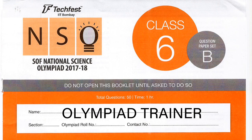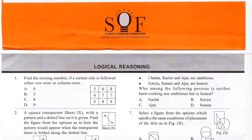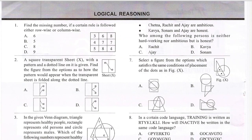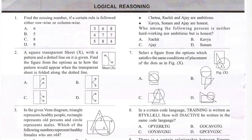The first section is logical reasoning. Question 1: Find the missing number if a certain rule is followed either row wise or column wise. Question 2: A square transparent sheet X with a pattern and dotted line is given. Find the figure from the options as to how the pattern would appear when the transparent sheet is folded along the dotted line.